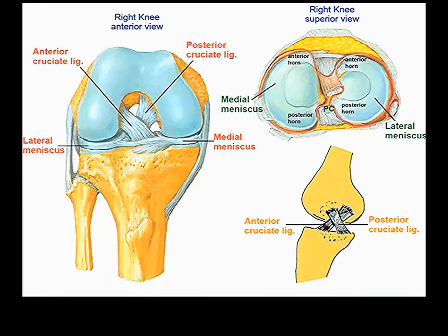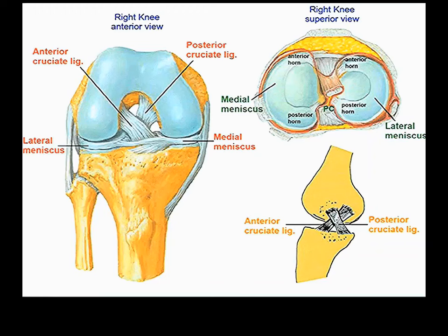The knee joint is complicated: there are lateral and medial femoral condyles, medial and lateral tibial condyles, and fibrocartilaginous menisci — the medial meniscus between the medial two condyles, and the lateral meniscus between the lateral femoral and tibial condyles. They play an important role in supporting body weight and limiting stress through the joint. Then there are the anterior and posterior cruciate ligaments.